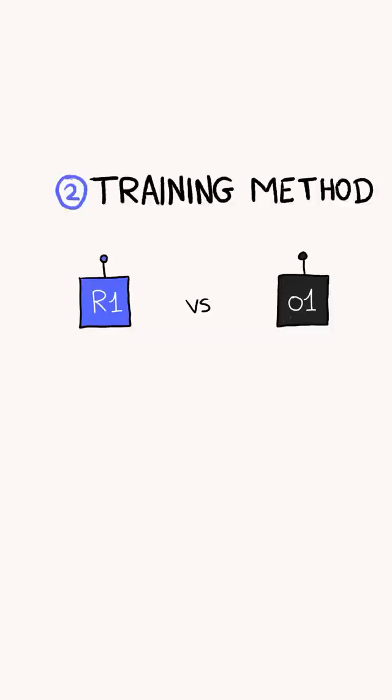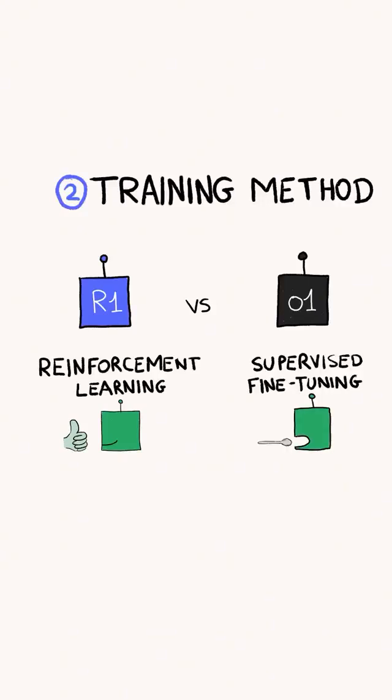DeepSeek also used a different training method that doesn't require as much data collection. They used reinforcement learning, which lets the model learn and improve on its own, as opposed to supervised fine-tuning where the model is given specific examples to learn from.